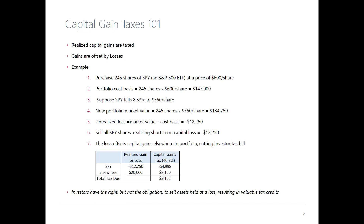Here's a very simple example. Suppose that you buy 245 shares of SPY — an ETF on the S&P 500 — and you pay $600 a share. That means you paid $147,000 for your portfolio. In tax language, that's called your cost basis: how much you paid for your portfolio. Now suppose SPY falls 8.33% to $550 a share, so your portfolio market value is now $134,750.